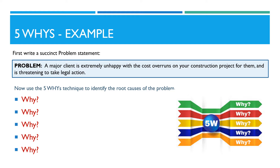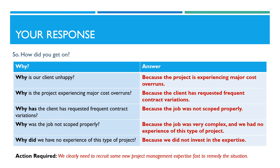Let's look at how we can apply the 5 Whys. First, write a clear problem statement like this: a major client is extremely unhappy with the cost overruns on your construction project for them, and is threatening to take legal action. Now use the 5 Whys technique to identify the causes of the problem. Why is our client unhappy? Because the project is experiencing major cost overruns. Why is the project experiencing major cost overruns? Because the client has requested frequent contract variations. Why has the client requested frequent contract variations? Because the job was not scoped properly.